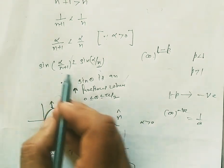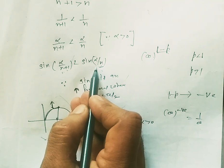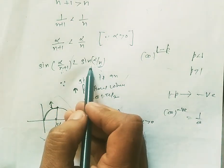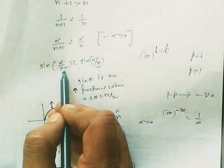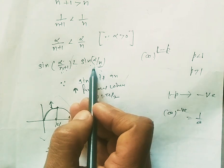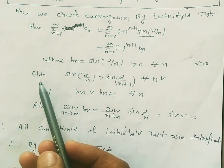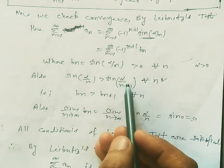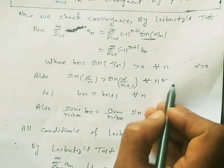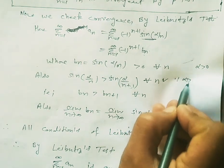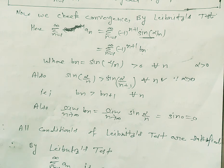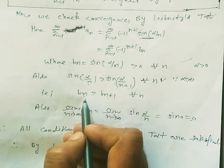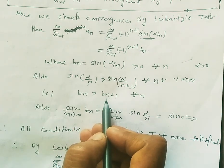When θ is in [0, π/2], sin θ is increasing. When n=1, the maximum value of α/n is α, and α/n decreases as n increases, so all values remain in [0, π/2]. Therefore sin(α/n) > sin(α/(n+1)), meaning b_n > b_(n+1) for all n.